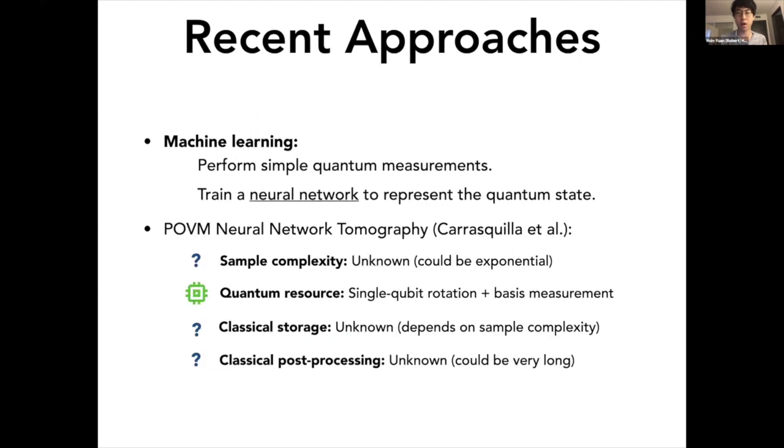Another very different line of research is based on machine learning, where you just perform some simple quantum measurements, and then by gathering the measurement data, you train a neural network to represent the quantum state. One of the most recent approaches is POVM neural network tomography, due to Juan Carrasquilla et al., where it only requires single qubit rotation plus computational basis measurements. However, as similar to many machine learning approaches, many of the aspects like what kind of state it works and how easy it is to learn those states are sort of unknown.